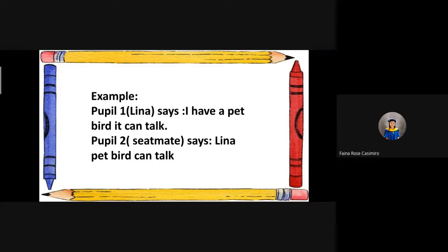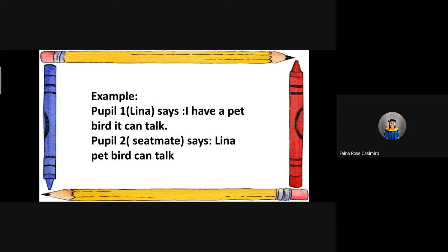Here is the example. Pupil 1, which is Lina, says: I have a pet bird; it can talk. Pupil 2, which is your seatmate, says: Lina's pet bird can talk. Class, do you understand my instructions? Very good. You may now start — be kind and cooperate.